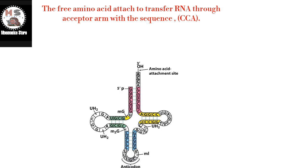The free amino acid is attached to transfer RNA through the acceptor arm with the sequence CCA. You can remember the sequence by: CCA can carry amino acid.